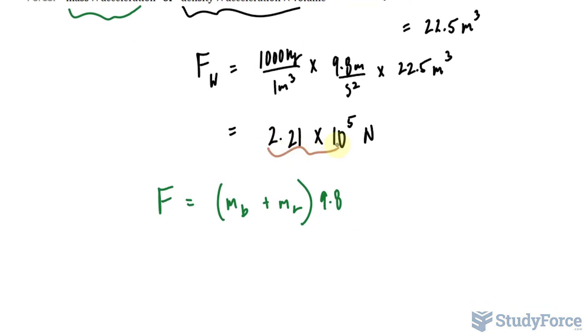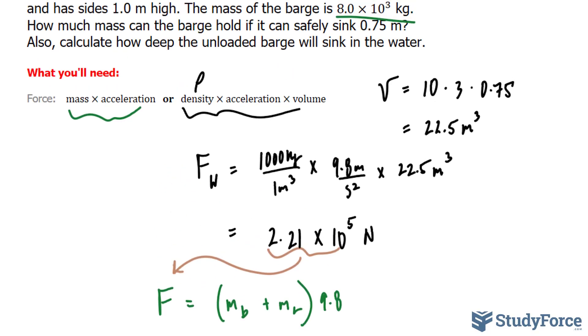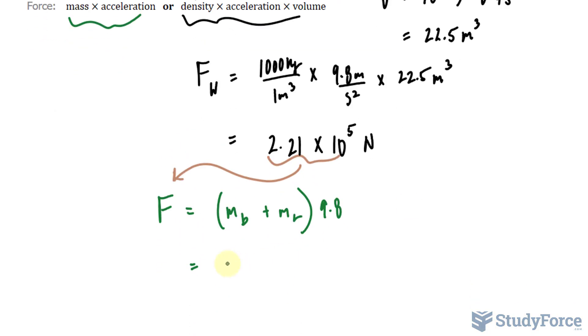The mass of the barge plus the mass of the load times the acceleration due to gravity being 9.8. In addition, I'll take this value and place it in for F. So the mass given in the question is 8.0 × 10³ kilograms, it's in the correct units.